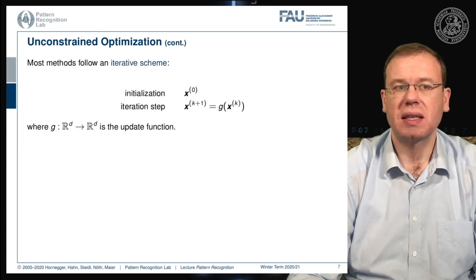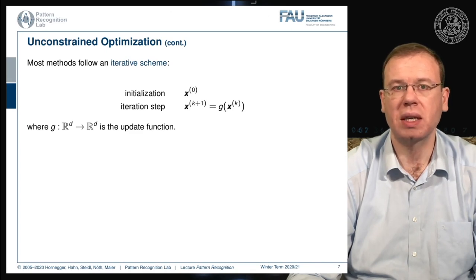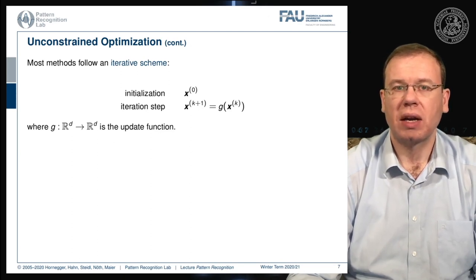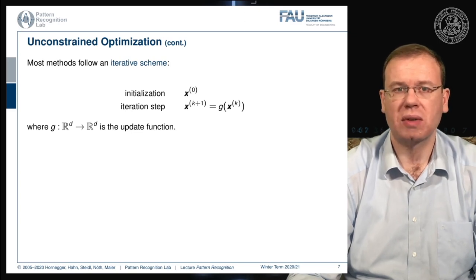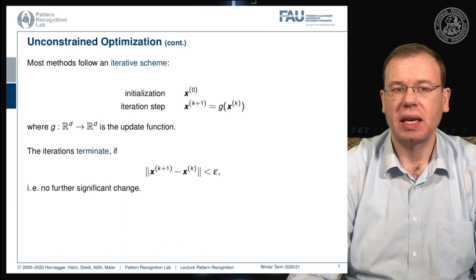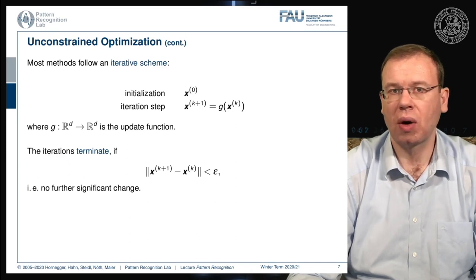Most methods in unconstrained optimization follow this iterative scheme. You initialize somewhere with some x_0, chosen randomly or as a fixed value. Then you perform iteration steps, producing a new x_{k+1} from the old x_k given some update function g. The iterations terminate if we only have small change, meaning the difference between x_{k+1} and x_k is below a threshold epsilon, indicating no further significant change.